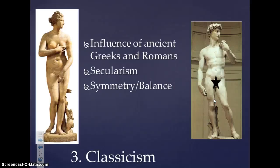The third characteristic is classicism — a replication of classical style from ancient Rome and ancient Greece. The two sculptures on the screen are sculptures of people: the one on the left is from the first century BC, and the one on the right is Michelangelo's David from 1504. We see a lot of similarities between the two because Renaissance artists were attempting to replicate the classical style and techniques of the Greeks and Romans.